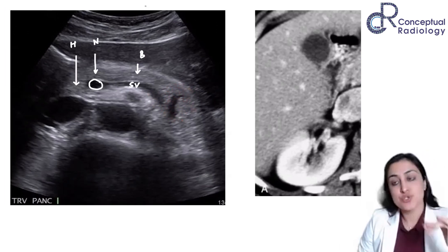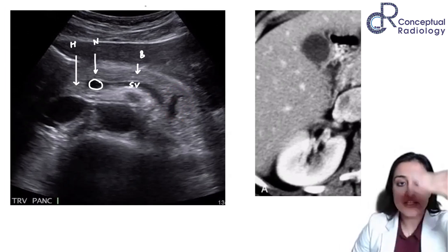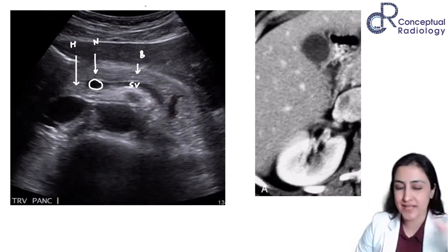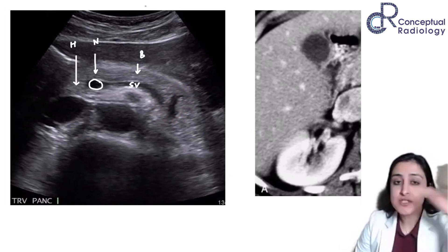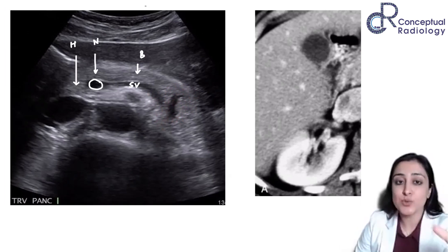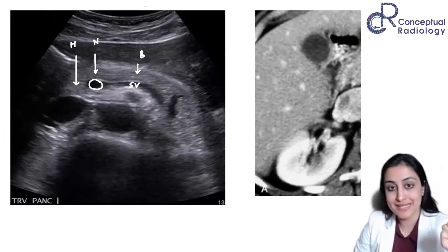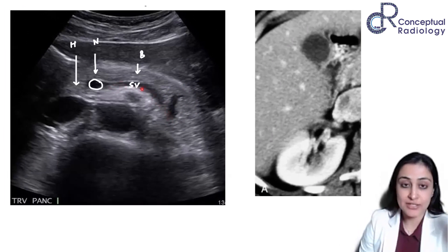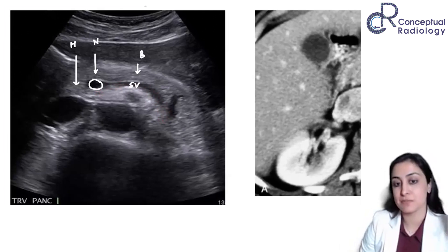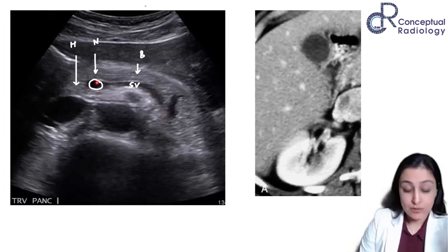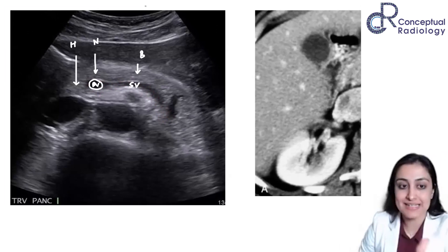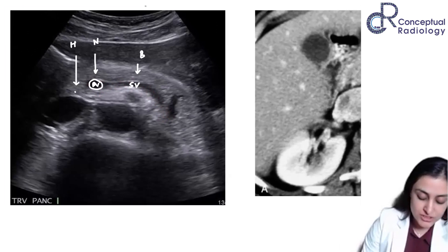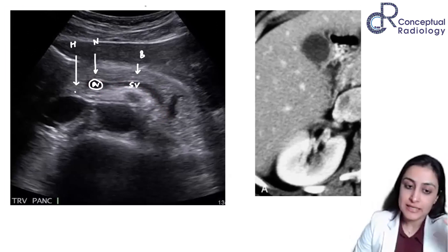The splenic artery runs posteriorly and superiorly, so you rarely see it in this plane. The only anechoic structure running behind the pancreas will be the splenic vein. Wherever the splenic vein merges with the SMV coming from below to form the splenoportal confluence — that is called the neck. What lies anterior to it is the neck, to the right is the head, and to the left is the body.